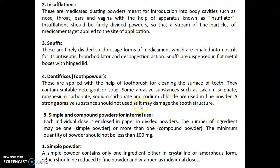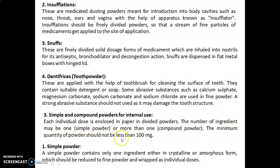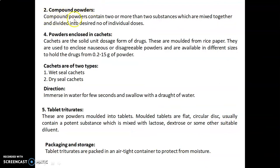A strong abrasive substance should not be used as it may damage the tooth structure. The third class is simple and compound powders for internal use. Each individual dose is enclosed in paper in divided powders. The number of ingredients may be one — a simple powder — or more than one — a compound powder. The minimum quantity of powder should not be less than 100 mg. A simple powder contains only one ingredient, either crystalline or amorphous, reduced to fine powder and wrapped as individual doses. Compound powders contain two or more substances mixed together and divided into the desired number of individual doses.